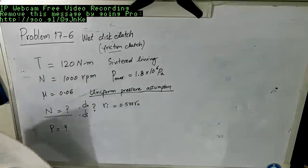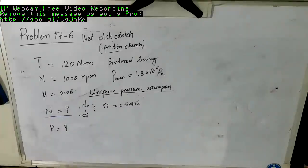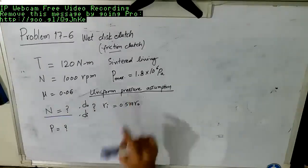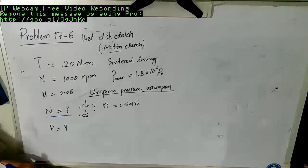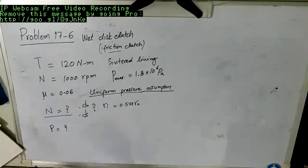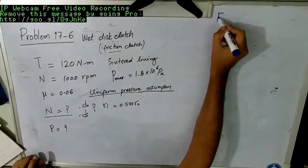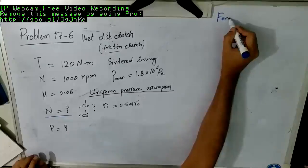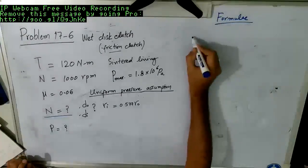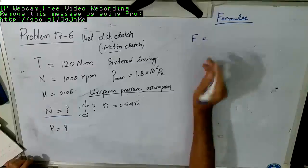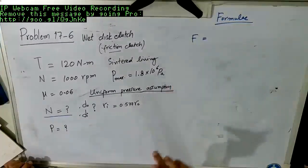If this much torque is being transmitted at this speed, the power transmission calculation is fairly simple, but our main objective here is actually to find out this N and then these diameters or radius, inner and outer radius or diameters.